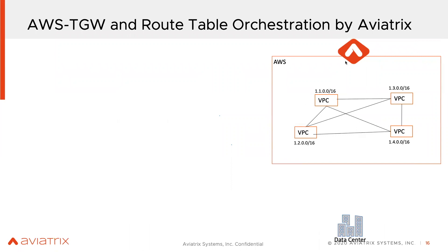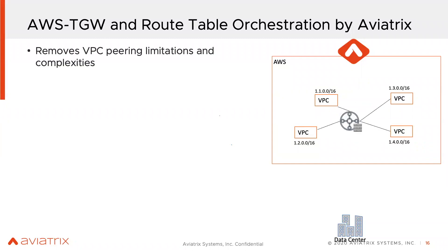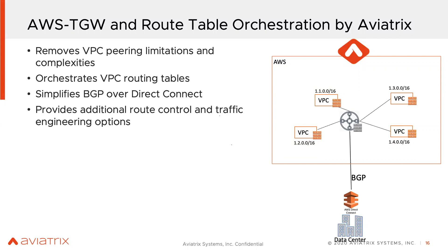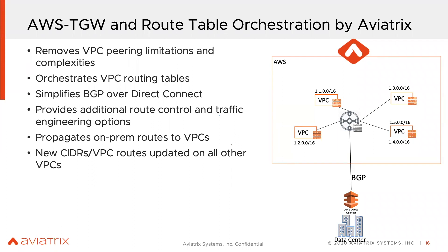Here's a teaser for how we solve it. The Aviatrix controller manages the AWS TGW, and by doing that we remove all those limitations — routing limitations, initial route configuration, route updates, BGP configuration over Direct Connect — all of that is handled automatically. We provide network correctness, propagate all on-prem routes to VPCs automatically, and any new updates are done automatically. This is the challenge we solve for a lot of customers.